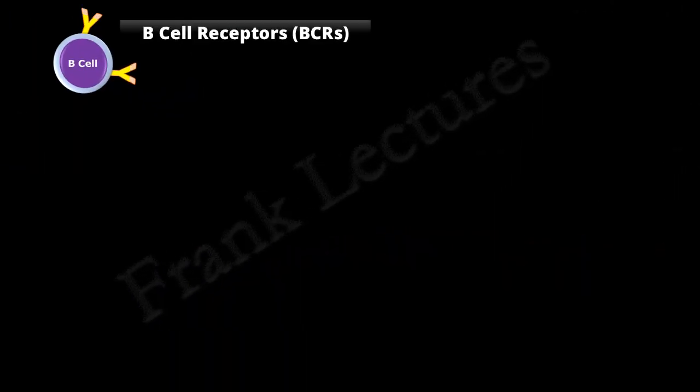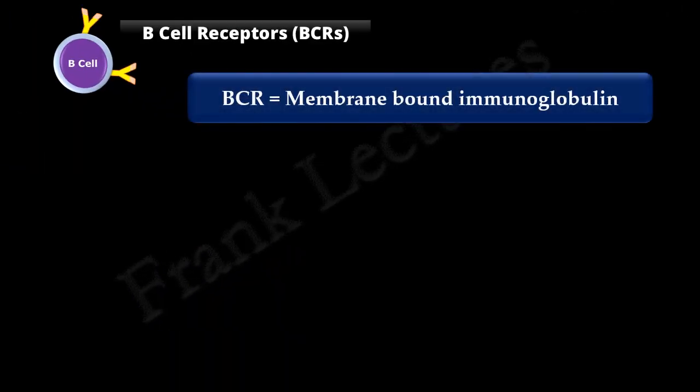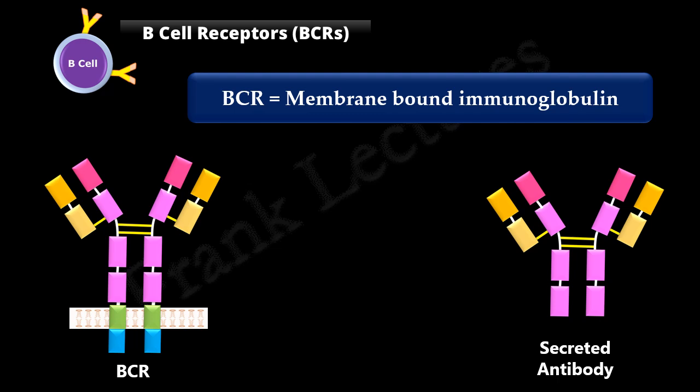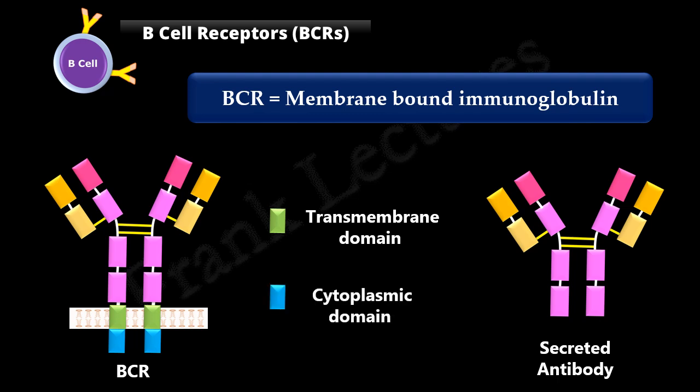B cell receptors are also known as membrane-bound immunoglobulins, because their structure is almost identical to the secreted antibodies. One difference is that B cell receptors have an extra protein sequence at the C-terminal of each heavy chain. This sequence anchors B cell receptors to the B cell membrane; it consists of a transmembrane domain and a cytoplasmic domain. These extra domains are absent in the secreted antibodies.